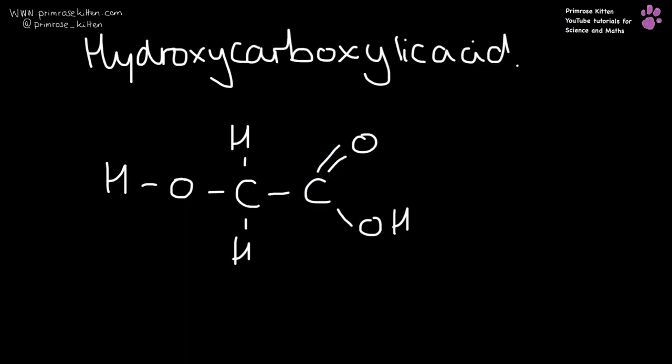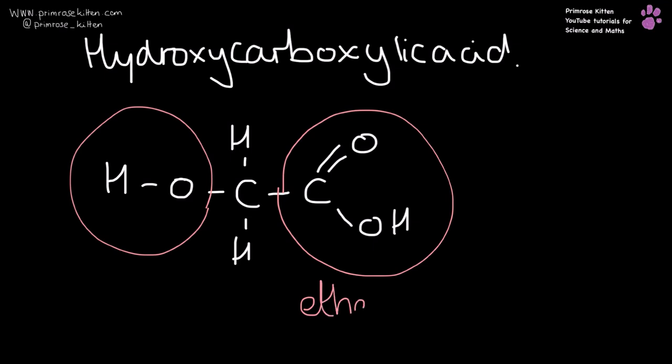Another thing that can be used to make a polyester is a hydroxycarboxylic acid. Here you can see we have our carboxylic acid group and we have our alcohol group, so this is ethanoic acid with an alcohol group, which is now hydroxyethanoic acid.